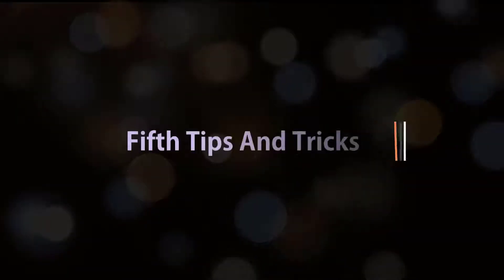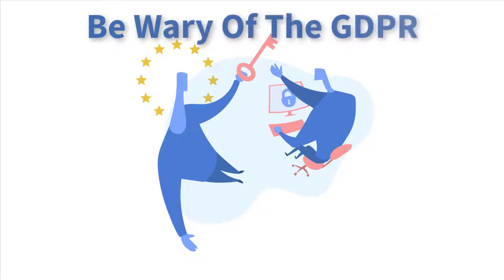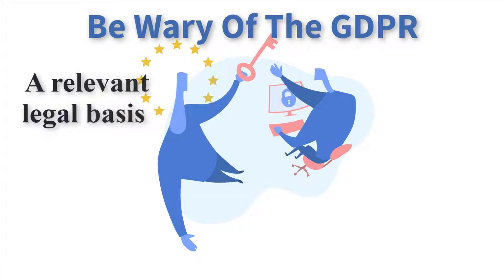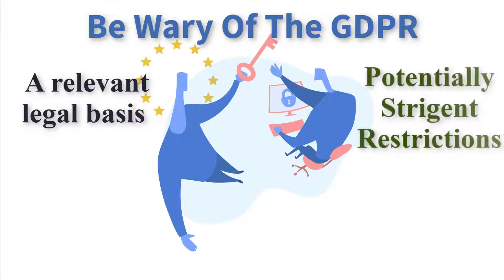Fifth tip: be wary of the GDPR. You need to ensure a relevant legal basis — for example, consent, contractual necessity, or legitimate interests — for your use of consumer data. Facebook itself will not be held liable for any data that third-party companies illegally accumulate through its platform. There are potentially stringent restrictions on the horizon regarding the Facebook Pixel. If you're running lead ads, you'll have to link to your privacy policy to collect consent in real time.